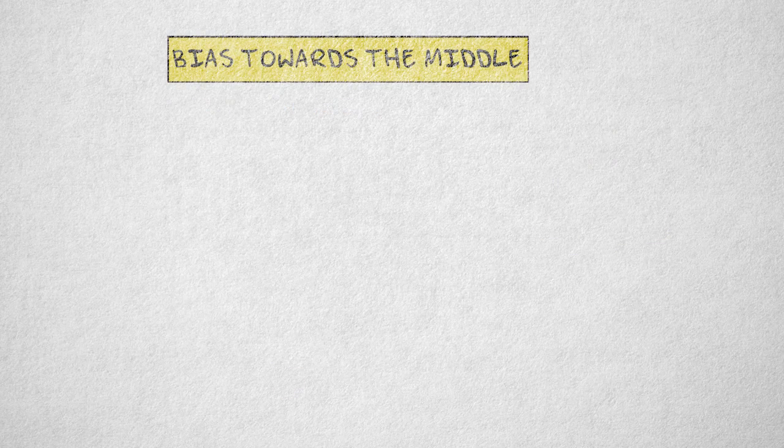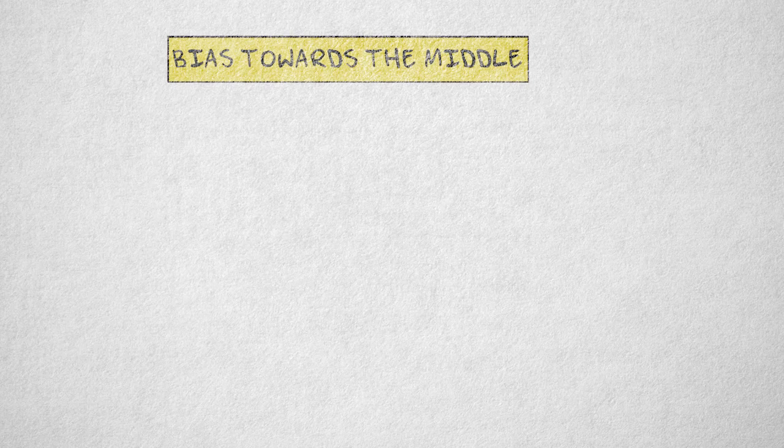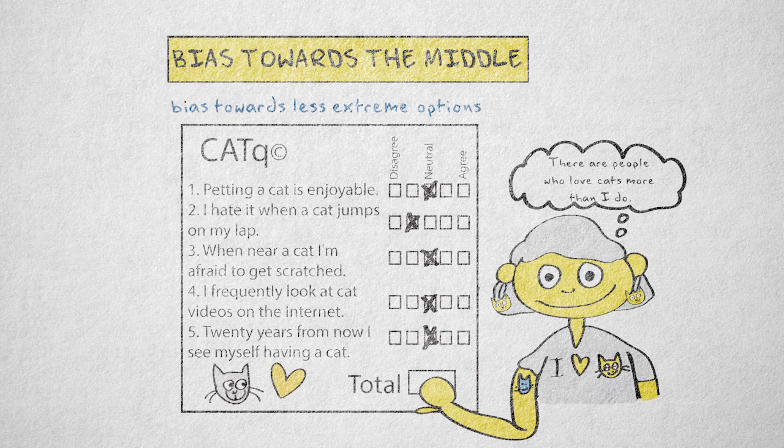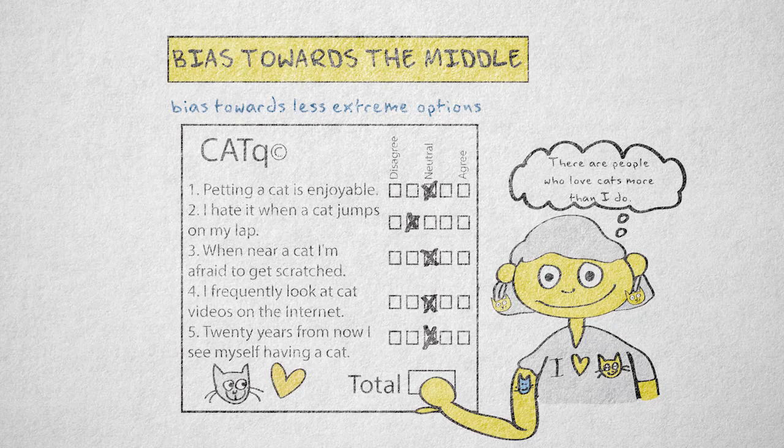Bias towards the middle is highly similar to an extreme response style. Only the tendency here is to choose a less extreme response option. For example, some respondents might never use the most extreme response options, because they want to seem nuanced.